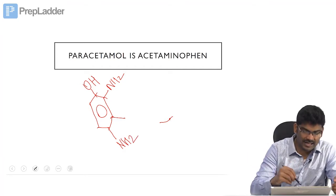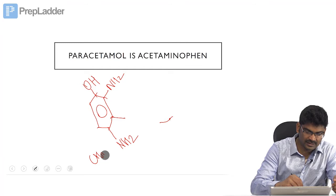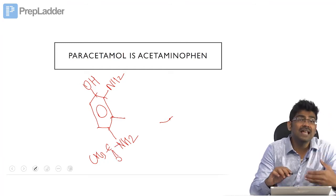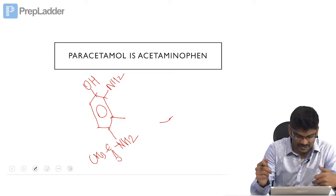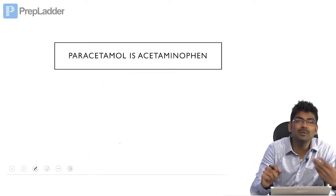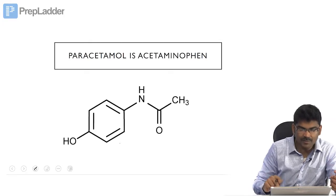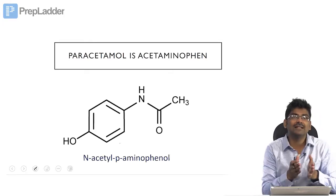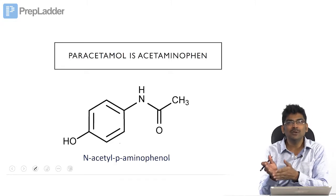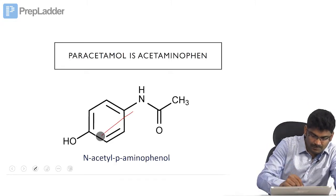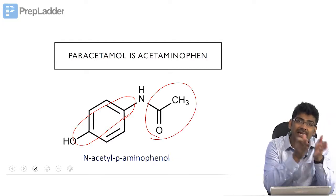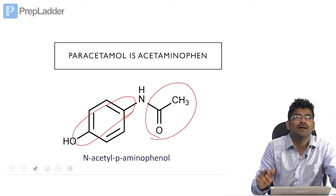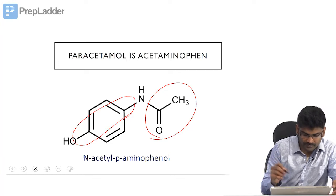If you acetylate that amino group — add a CH₃C=O group — that will become N-acetyl paraaminophenol. That is your paracetamol. Paracetamol is nothing but N-acetyl paraaminophenol. This is the para position, this is your acetyl group attached to the nitrogen. That is why it is N-acetyl paraaminophenol.